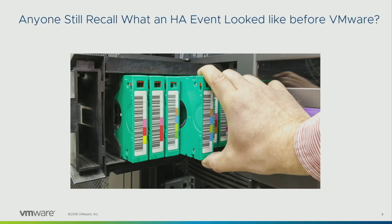If something failed in your data center, HA didn't just restart a virtual machine or a physical machine — we didn't have that option. You actually had to go into the data center, figure out if you had spare hardware. If you were lucky, you had hardware laying around. If not, you had to wait for an engineer to fix the host. Then you'd get your tapes, wait 8 or 12 hours, and if you were lucky, you'd have all your data back and the application running again. Luckily, the world has changed — and it changed a lot.